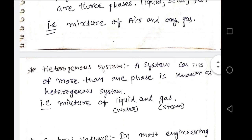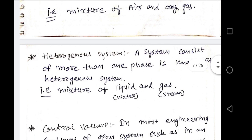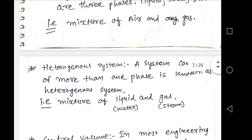A heterogeneous system means a system consisting of more than one phase. Examples include mixtures of ice and water, and mixtures of water and steam. These are examples of heterogeneous systems where different phases are mixing with each other.